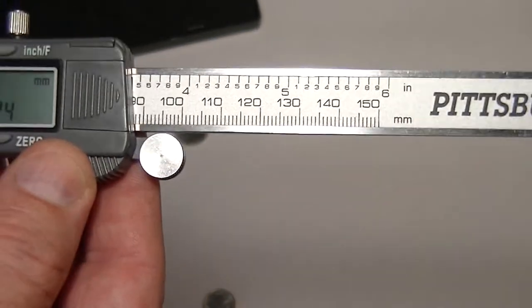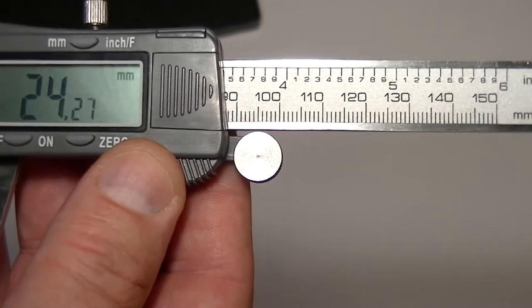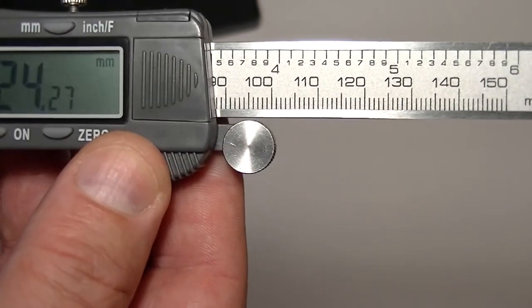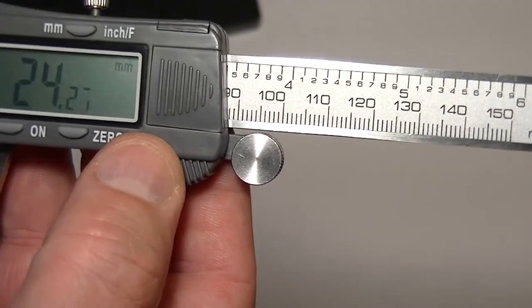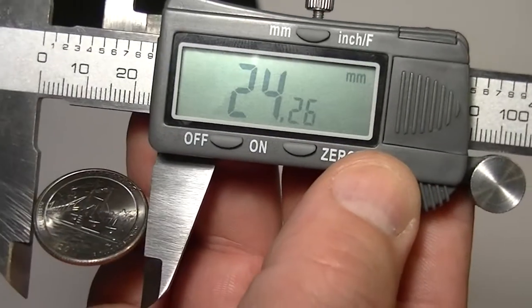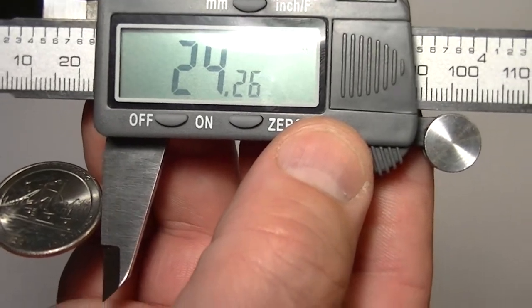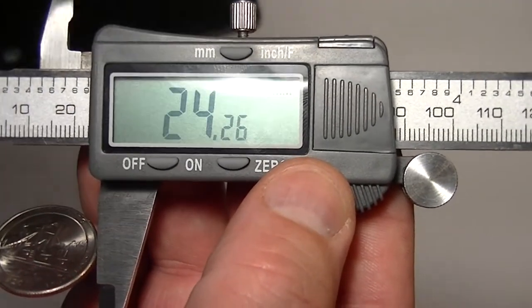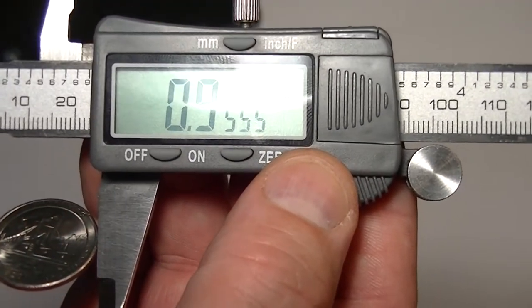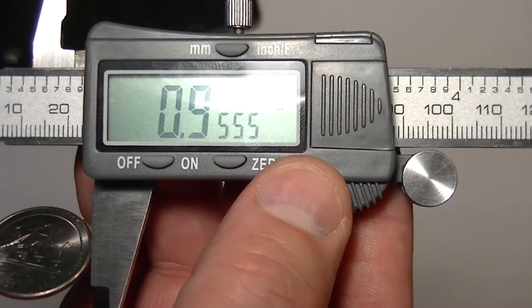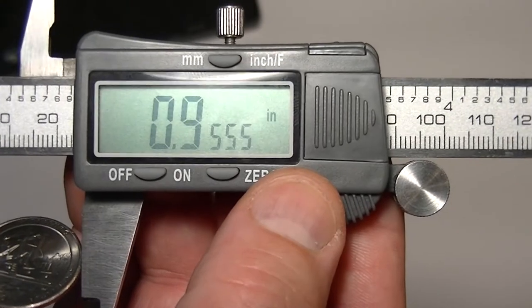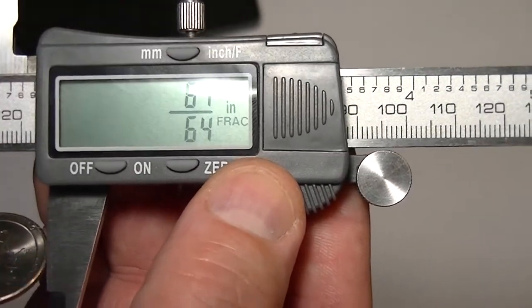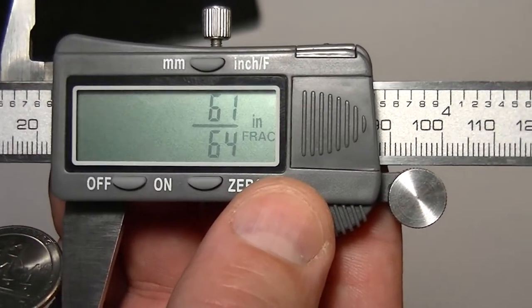Again, let me do that. There we go. 24.26. So that's exactly what a quarter is supposed to be. Back to inches. It's supposed to be .955 inches. And that is exactly what we got. And a fractional value is 61.64. So very accurate on that.